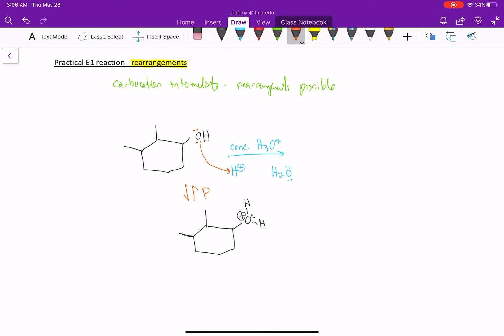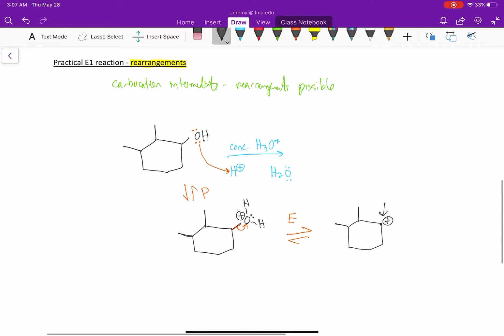That is now a very good leaving group. So the carbon-oxygen bond can break. This bond can become a lone pair on the O. We can eliminate out that water molecule, thereby giving us a positive charge on this carbon. And again, remember that there's a hydrogen there that I'm not drawing in.